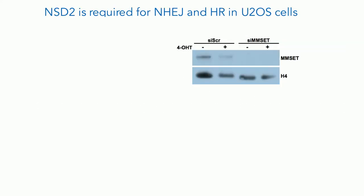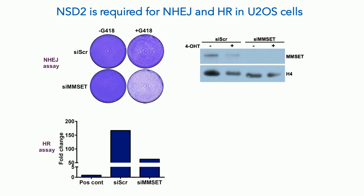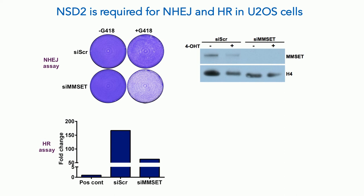We looked at this using two systems, including the U2OS osteosarcoma system where we knocked down MM-SET with siRNA and then looked at DNA damage by a non-homologous end-joining assay — antibiotic resistance with a linearized plasmid. If you knock down NSD2, you get fewer colonies, suggesting the linearized plasmid is less able to integrate by NHEJ. We also see decreases in homologous recombination. When we knock down NSD2 in these osteosarcoma cells, we lose two critical components of DNA damage repair: RAD51 and CTIP.